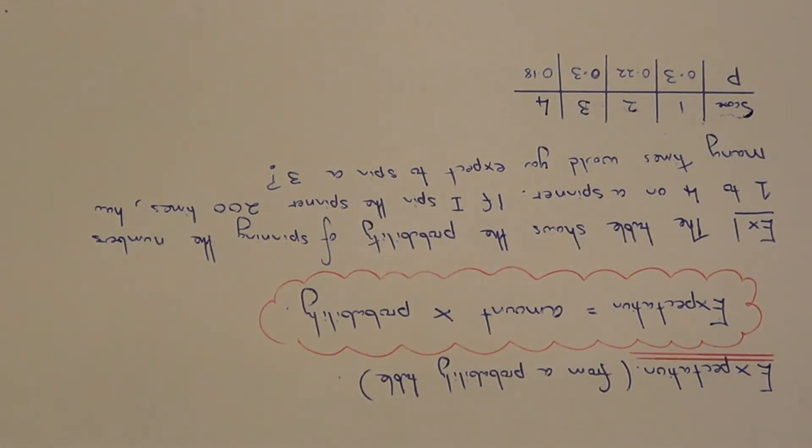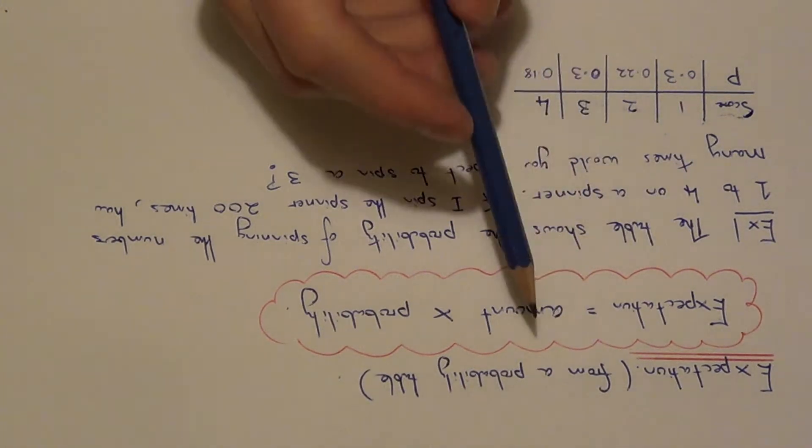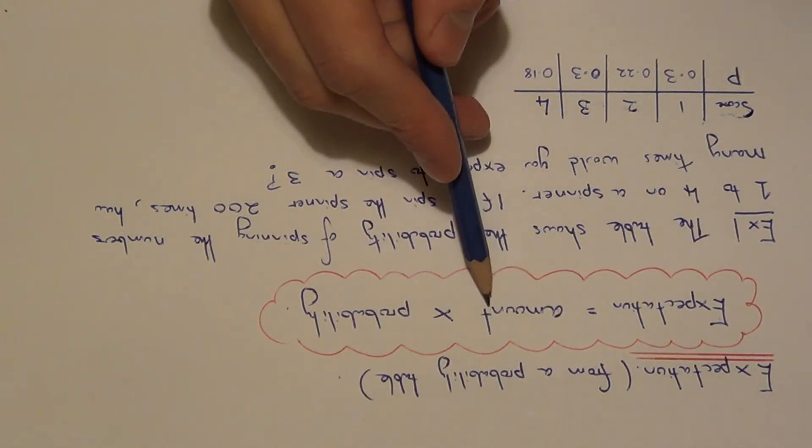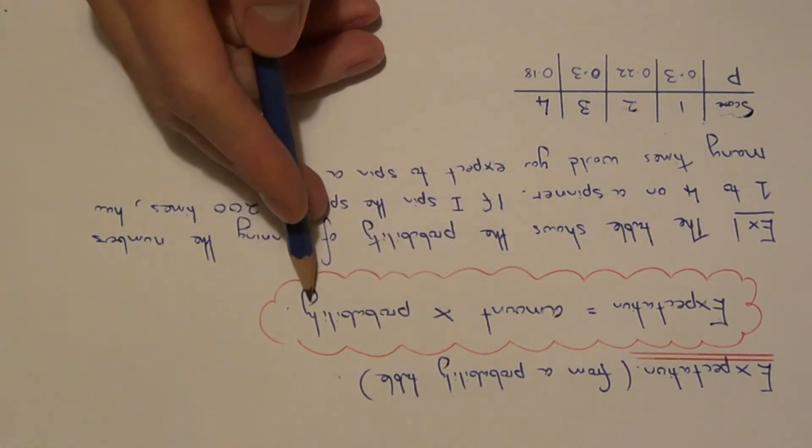Expectation is the amount of times you expect an event to happen. Working it out is actually quite easy to do. All you need to do is multiply the amount of times you are doing it by the probability.